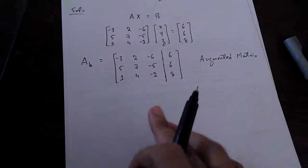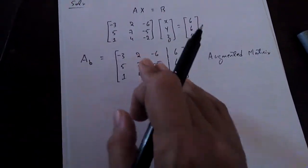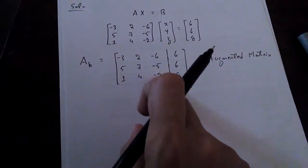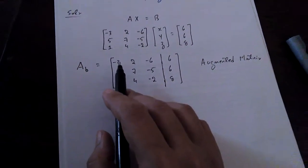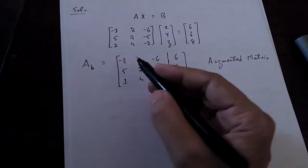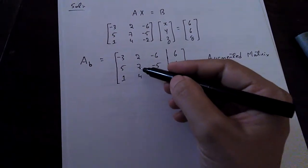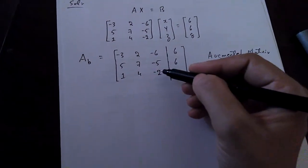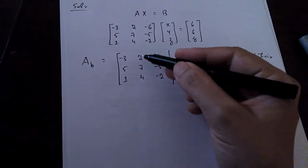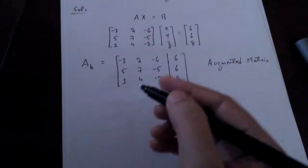Now, we have to make the diagonal elements of this 3×3 matrix A, present in the augmented matrix, equal to one. That's the major objective. Once we make the first diagonal element one, we make all numbers below it zero. Then we convert the second diagonal element to one and the numbers below it to zero. Then the third diagonal element becomes one. After that, in the Jordan part, we convert the upper triangle elements to zero as well.